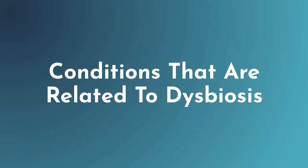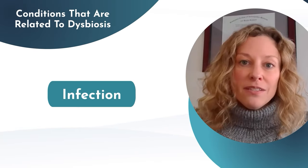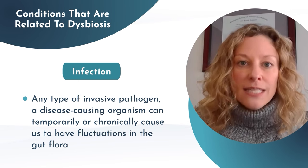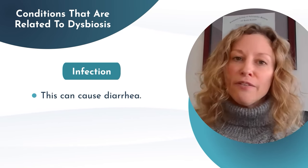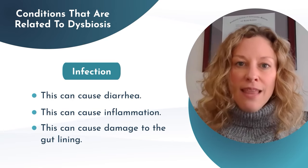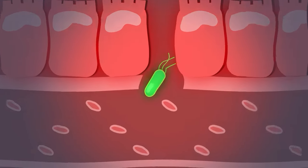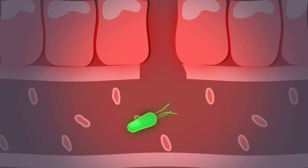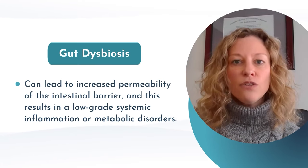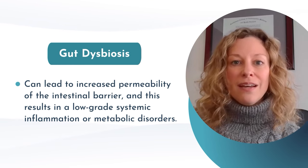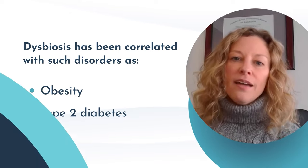Let's talk about the conditions related to dysbiosis. There are several that we know are directly related to the microbiome. One in particular is infection — any type of invasive pathogen can temporarily or chronically cause fluctuations in gut flora, leading to diarrhea, inflammation, or damage to the gut lining. Some types of pathogens even directly invade the gut barrier, threatening to escape into the bloodstream. Gut dysbiosis can also lead to increased permeability of the intestinal barrier, resulting in low-grade systemic inflammation or metabolic disorders, and has been correlated with obesity, type 2 diabetes, and ischemic stroke.